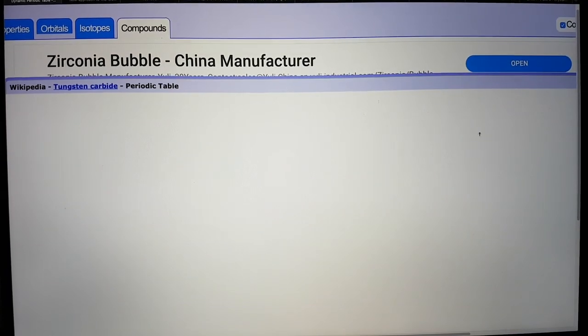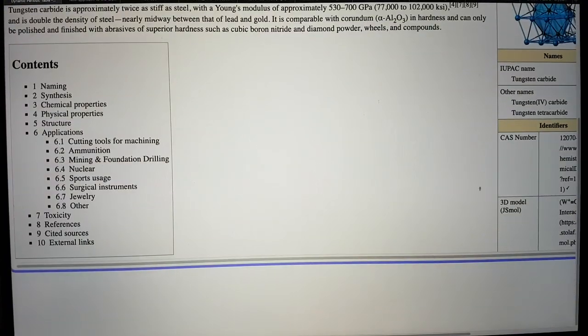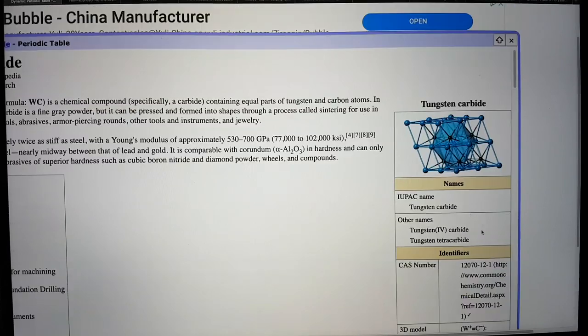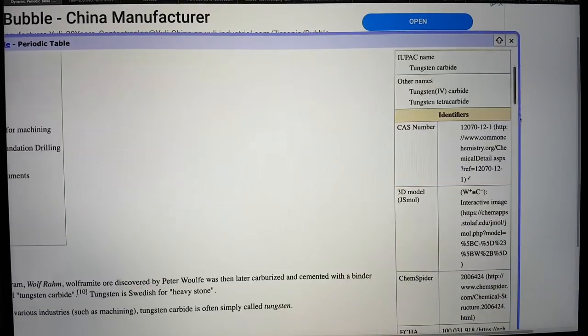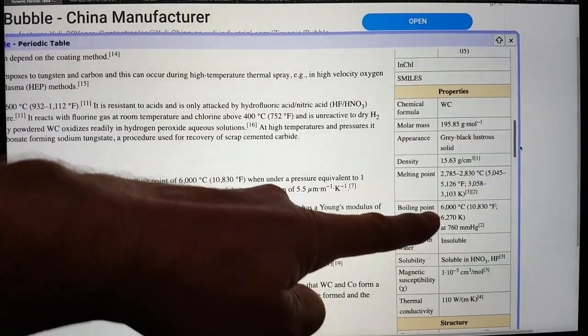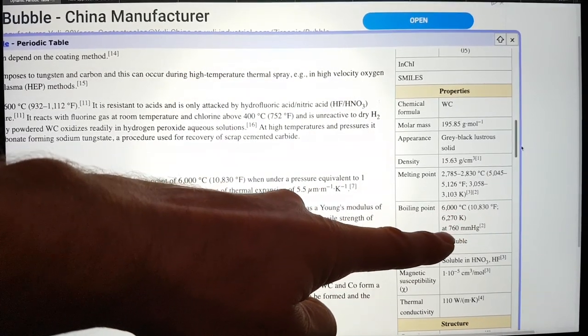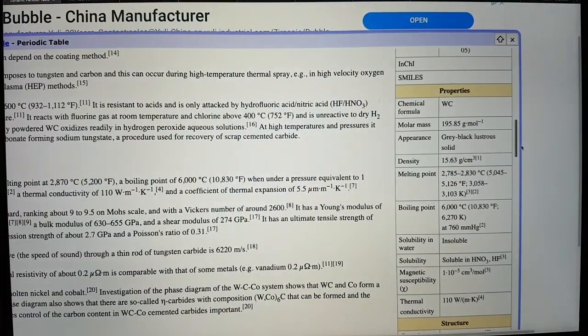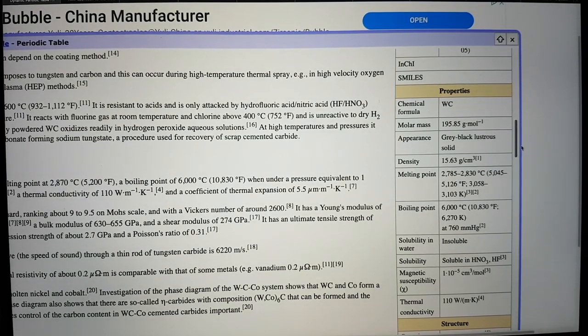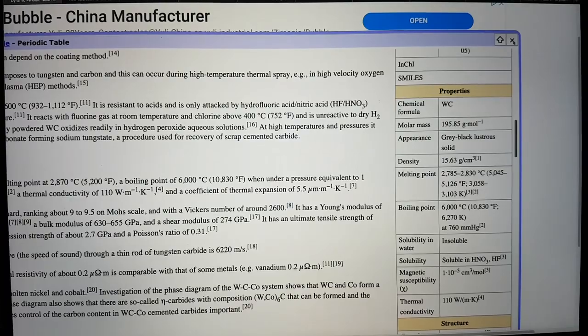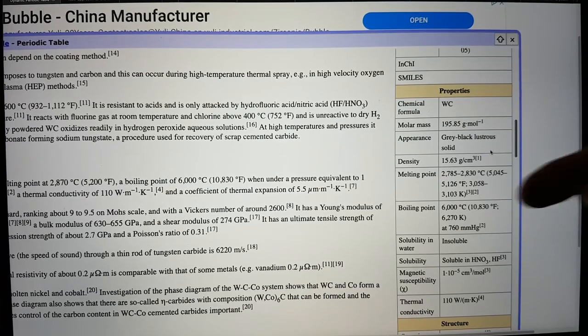If you look at tungsten carbide, that indeed does have a temperature. The boiling point of that is 6,000 degrees C, which is quite a lot higher. It's between 400 to 450 degrees higher than the temperature of the surface of the sun. And so this would be ideal.